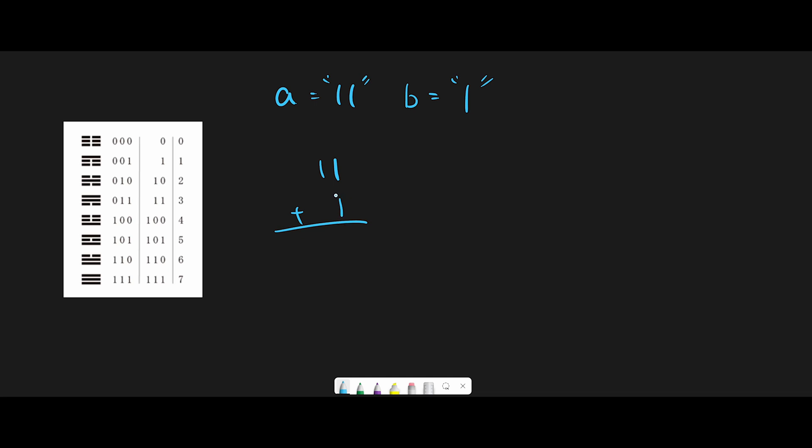So when we calculate two binary numbers, 1 plus 1 is 0 and we have carry, and 1 plus carry is 0 and we have carry, and 1. So total of 100, that means 4.